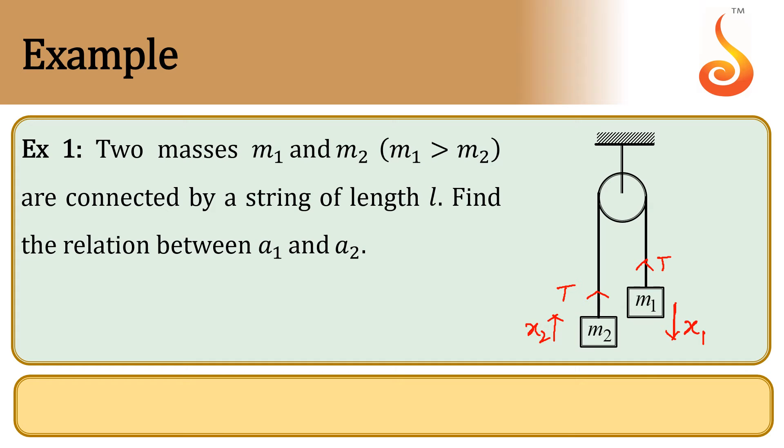Therefore, network done is always zero, which is nothing but W1 plus W2. So, work done for the first body: since force is acting upward and displacement is in the downward direction, work will be negative. So, minus TX1 plus.